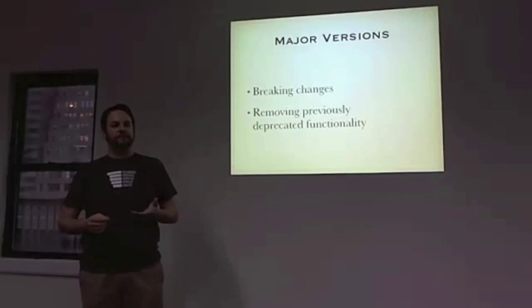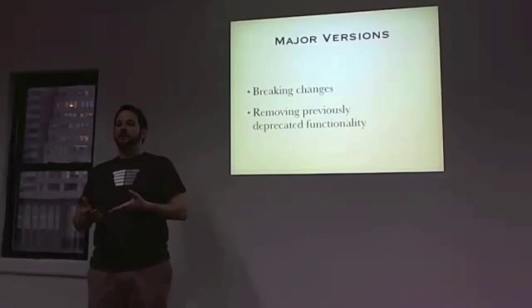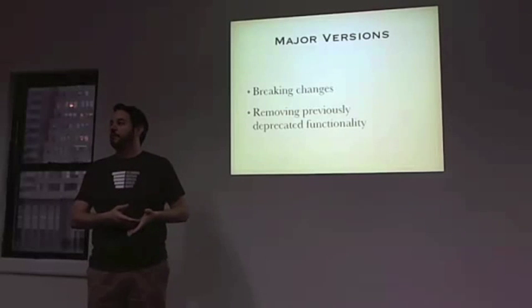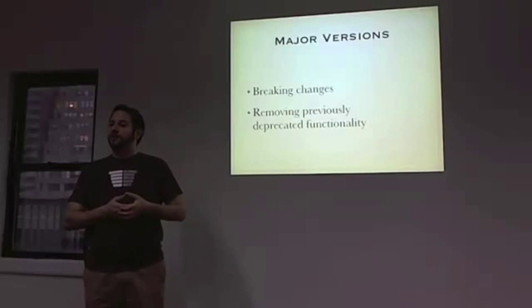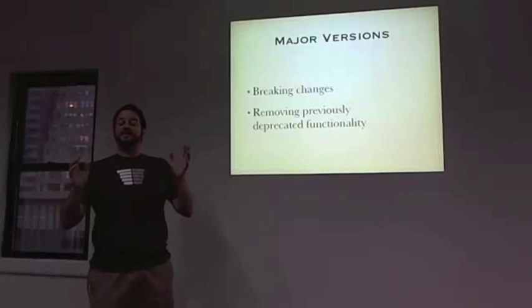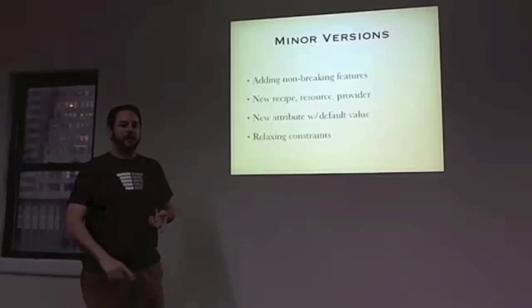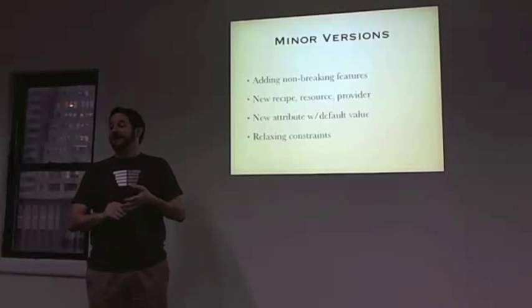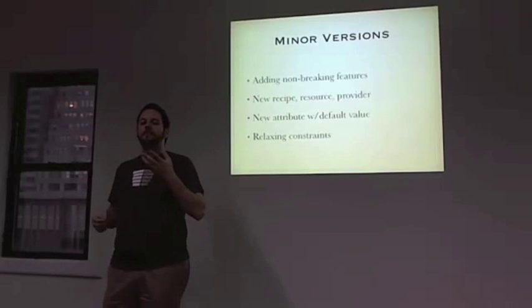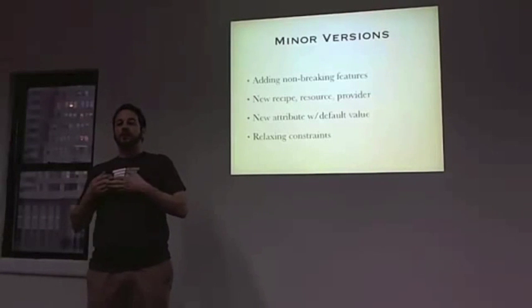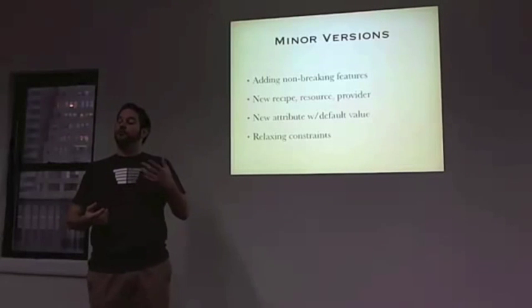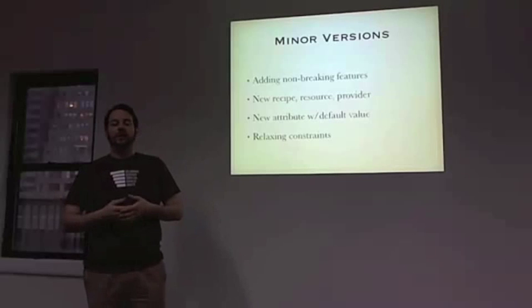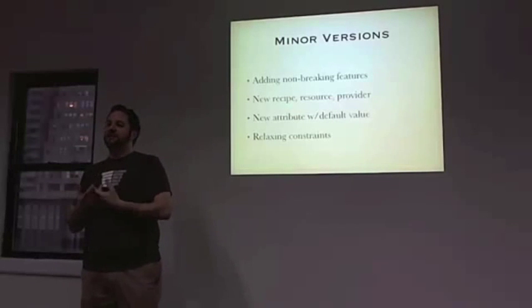A big part of versioning is: what is the public API of the cookbook, and when do you increment the different parts of a version? You increment a major version when you break something that has existed before. That is an immediate red flag to somebody: you've now gone from version 2 to version 3 — that says if you change something, I need to review it, I need to look at the upgrade path, I need to test it more thoroughly. Minor versions should only include feature upgrades — something that doesn't break anything, something new: a new recipe, a new provider, attributes that provide sane defaults.